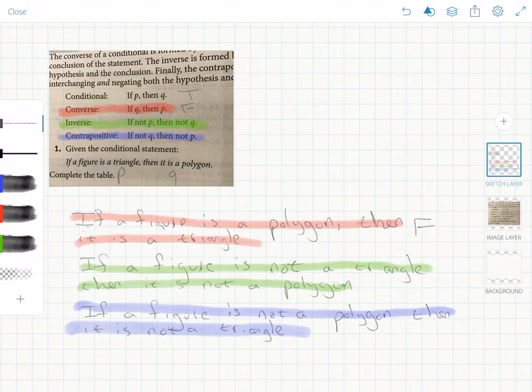And the inverse, if a figure is not a triangle, then it is not a polygon. But again, a square is not a triangle, but a square is a polygon. So the inverse is also false.